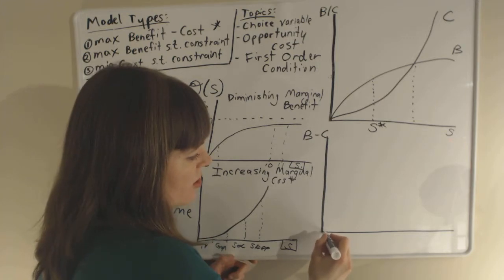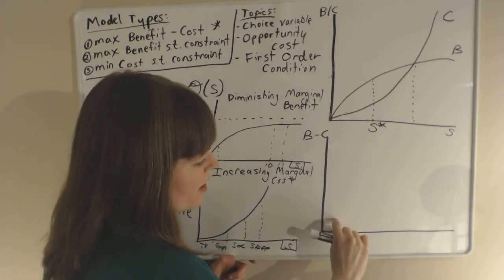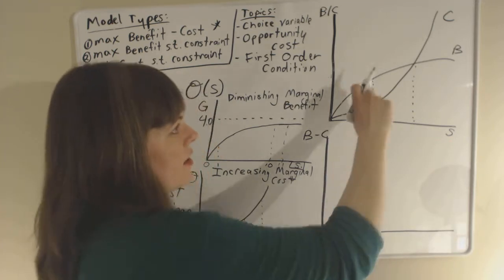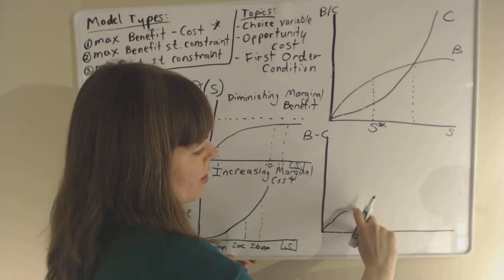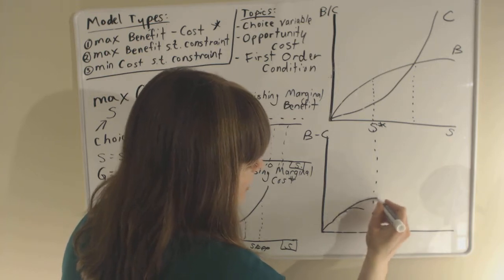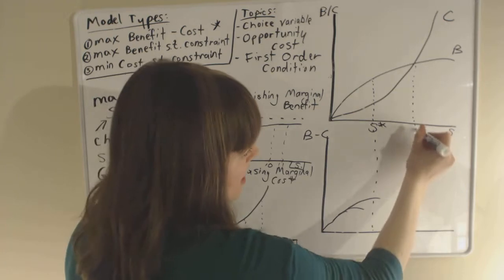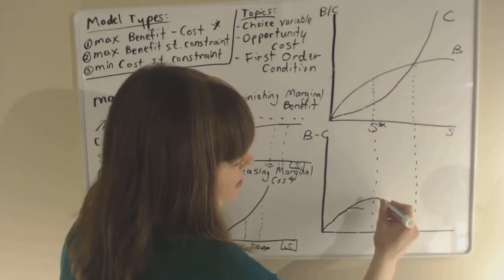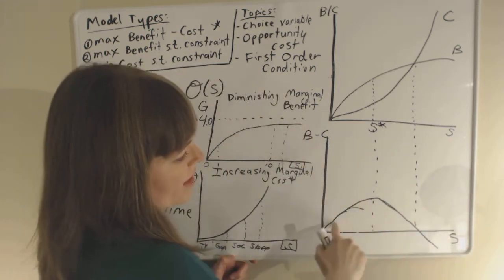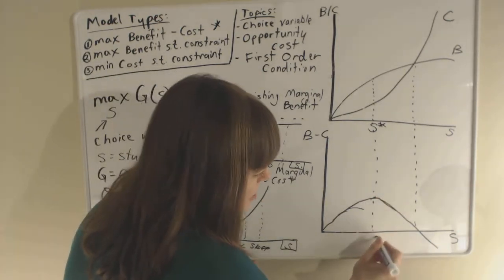We can also graph benefit minus cost directly — it's just the difference between the two lines. Since both start at zero, the benefit-minus-cost graph starts at zero. As study time increases, benefit minus cost rises at first, then reaches its maximum right where the gap between the two curves is largest, then falls back to zero. That maximum is the optimal amount of studying — this person is trying to maximize benefit minus cost, so they choose that optimal amount.